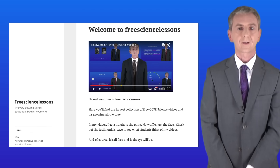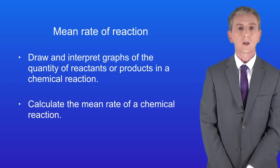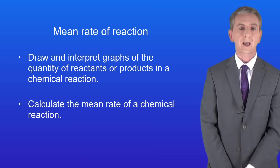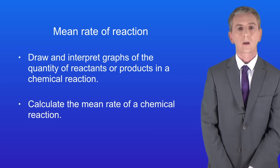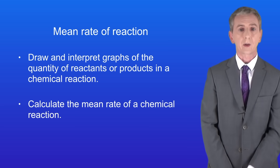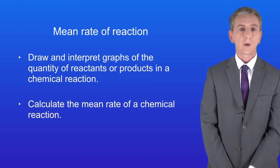Hi and welcome back to freesciencelessons.co.uk. By the end of this video you should be able to draw and interpret graphs of the quantity of reactants or products in a chemical reaction. You should then be able to calculate the mean rate of a chemical reaction. This sounds a bit tricky but the actual ideas are relatively straightforward.